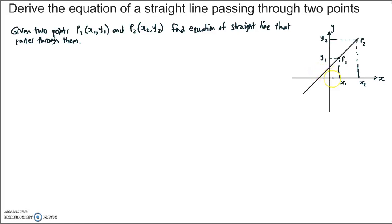In this video, the problem we would like to solve is the following. Suppose we have the xy plane and we have two arbitrary points P1 and P2 in that plane. We would like to find the equation of the straight line that passes through those two points. There's only one unique line that can pass through those two points. P1 has the coordinates x1 and y1, and P2 has the coordinates x2 and y2.